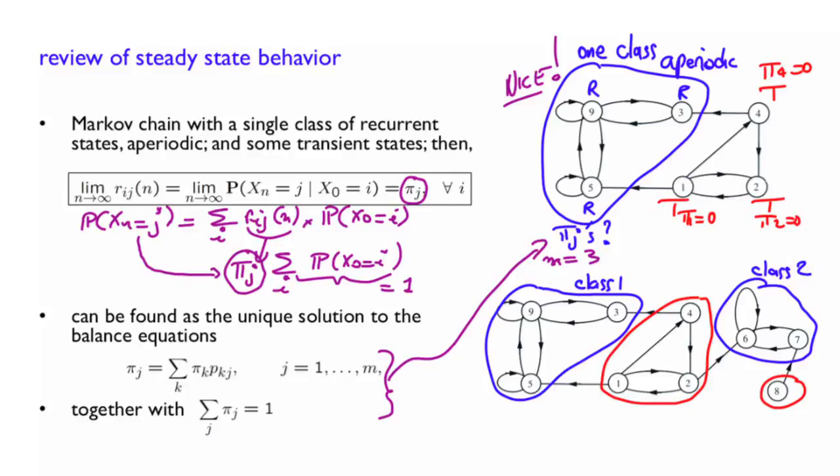So what happens in the long run when you have situations like that? Well, in the long run, if you start from here, you're going to stay here. And in some sense, the study of that recurrent class is the same as the study of that recurrent class. And in order to find the steady state probabilities of these states, assuming that you started in one of these, will be exactly the same as before. So you would use the same system with m equals 3 here.